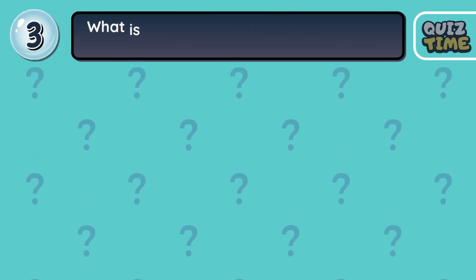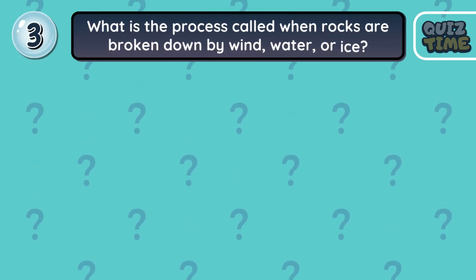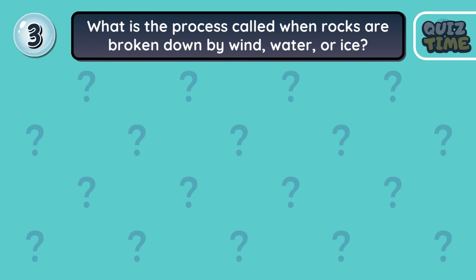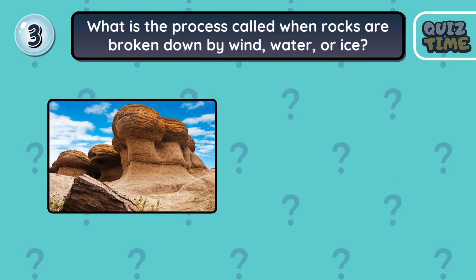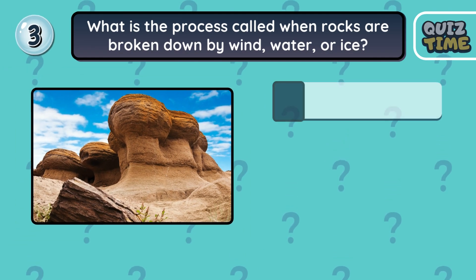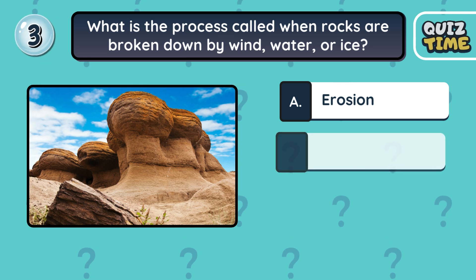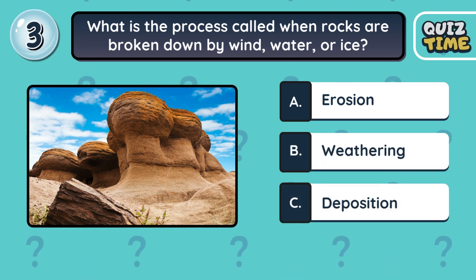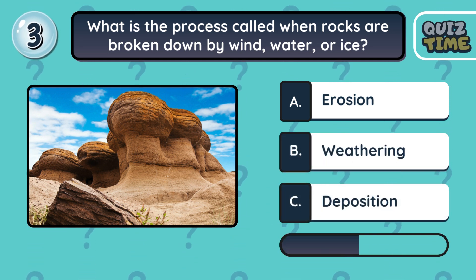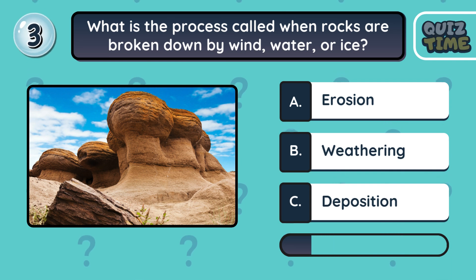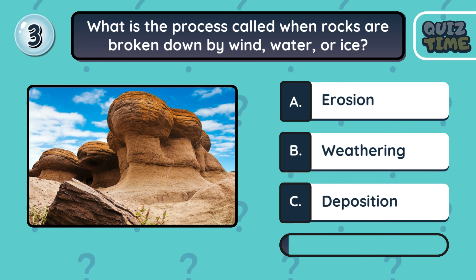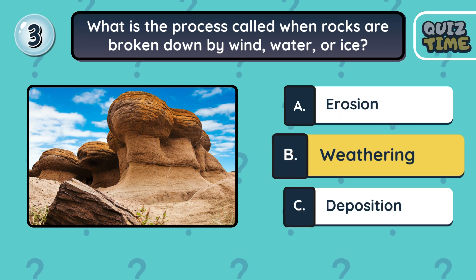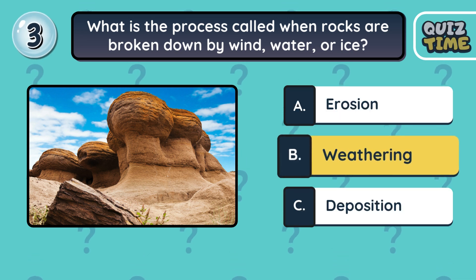Number 3. What is the process called when rocks are broken down by wind, water, or ice? A. Erosion. B. Weathering. C. Deposition. The correct answer is B. Weathering.